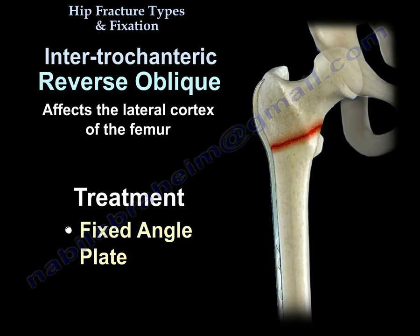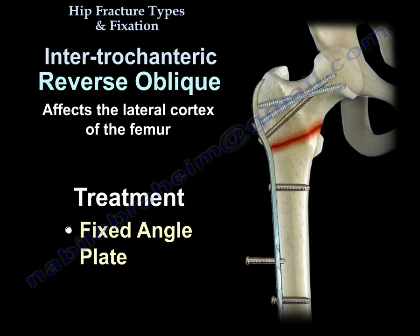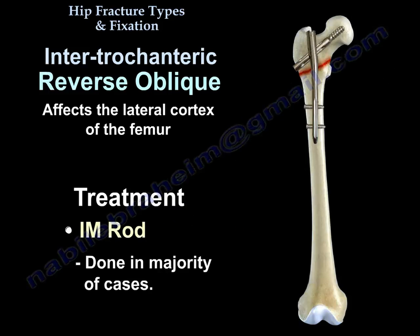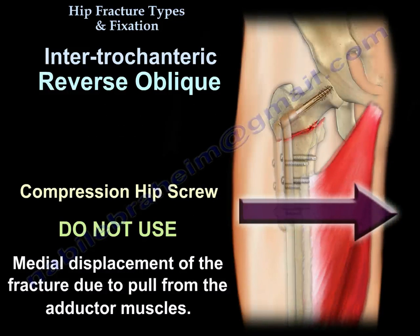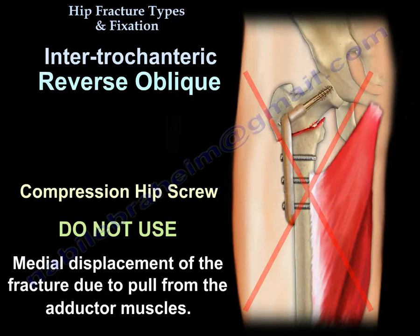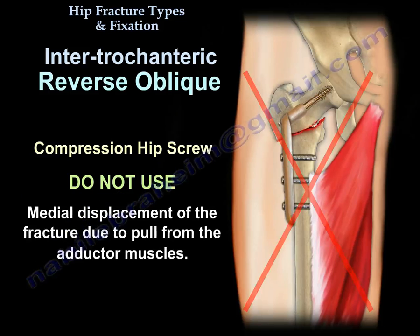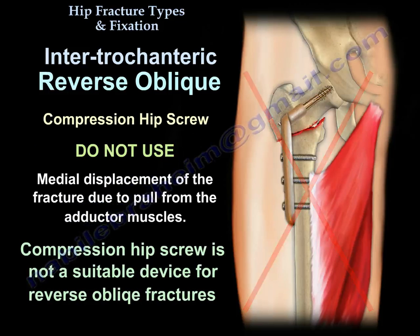Some prefer a fixed angle plate, but the majority of cases are done by IM rodding. Do not use a compression hip screw with a reverse oblique fracture — there will be medial displacement of the fracture due to the pull of the abductor muscles. It is not a suitable device for reverse oblique fractures.